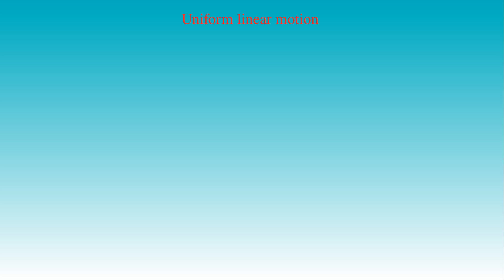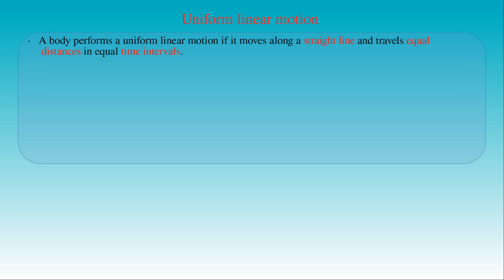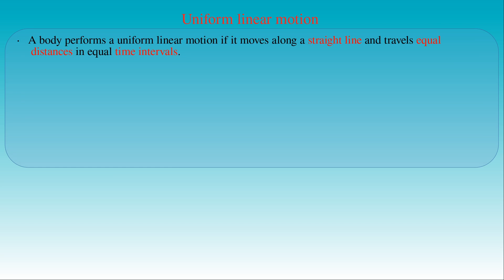The simplest form of motion is the uniform linear motion. By definition, a body performs a uniform linear motion if it moves along a straight line and travels equal distances in equal time intervals.